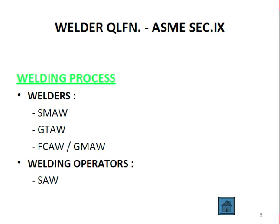Welding process is related to both welders and welding operators. Welders can be qualified for SMAW, GTAW, FCAW, or GMAW. However, for SAW (Submerged Arc Welding), we must use the term 'welding operator' rather than 'welder,' because SAW is a machine process.